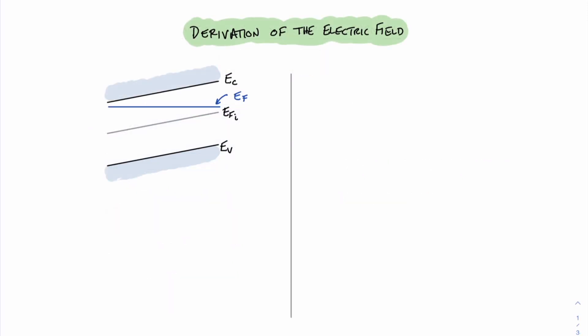Now let's take a closer look at the derivation of the electric field. Before we start with the math, let's define a few assumptions. The first assumption is that we're going to be in thermal equilibrium. The next assumption is that the doping concentration N_d is sufficiently larger than the value of the intrinsic carrier concentration. This assumption will lead to a quasi-neutrality condition, in which case we assume that the number of carriers in the conduction band is the same as the donor doping concentration.